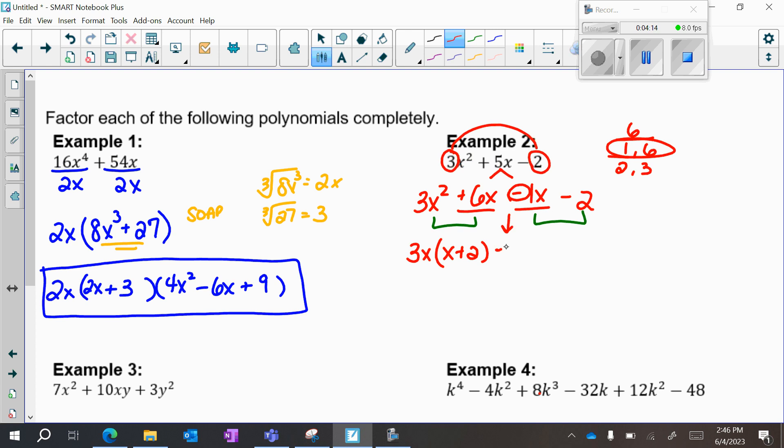This sign always comes out for your next pair. This grouping has a GCF of negative 1, and I'm left with x plus 2. At this point, if my two binomials don't match, something went wrong. They do match, so I have x plus 2, and I have 3x minus 1.